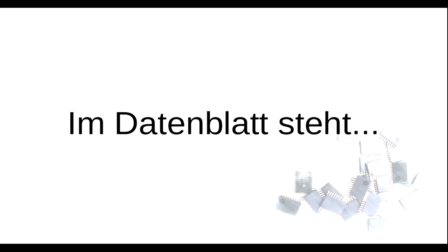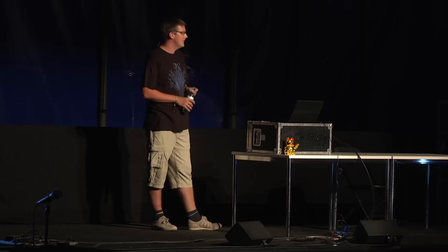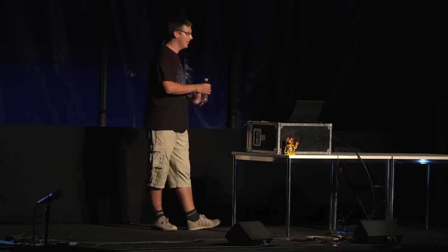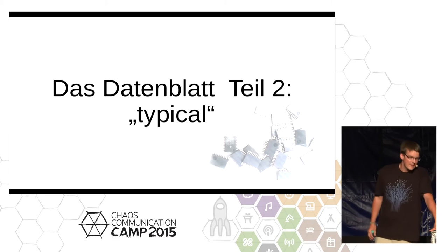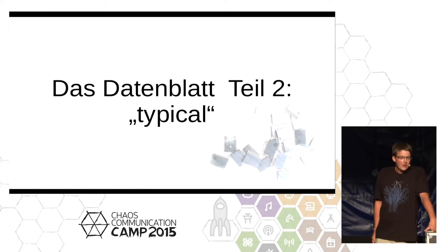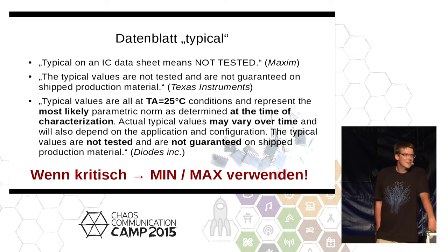Now, a large topic: datasheets. Unfortunately, datasheets are written by humans, and humans make errors. If you have a datasheet, first look if these people made errors — are there known corrections? The editing history can be important; it tells you what has been changed and corrected. Next interesting item: 'typical.' On the first page you have typical details. 'Typical' means, unfortunately, nothing more than 'we would like it to be that way.' If you read the footnotes carefully you'll find some very informative answers.